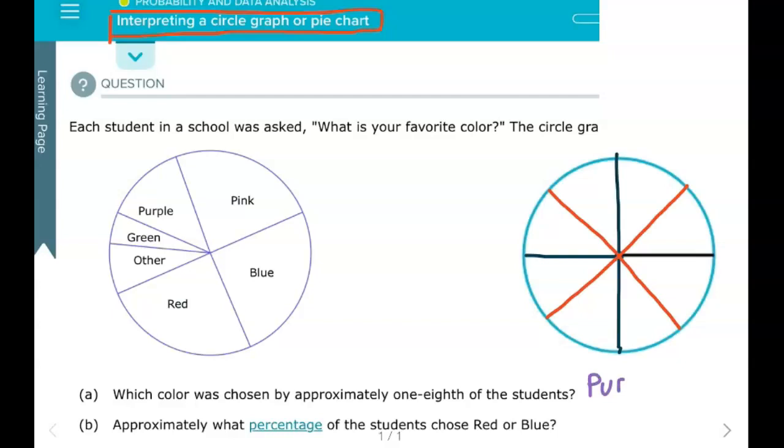And it says approximately what percentage of the students chose red or blue? So when we combine this region, the red region and the blue region, we get this portion here which is about 50%.